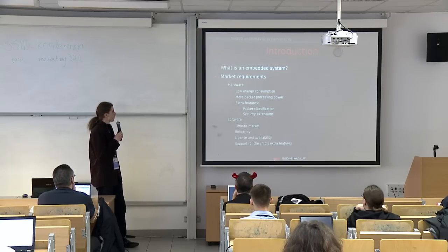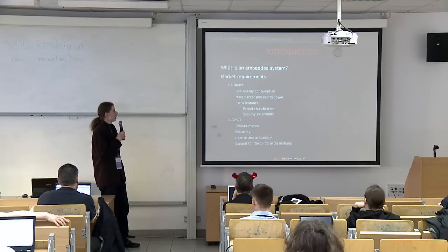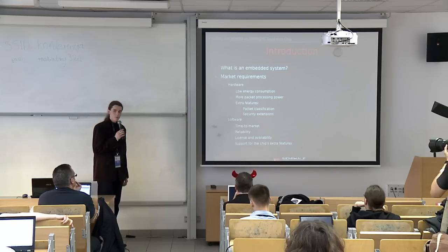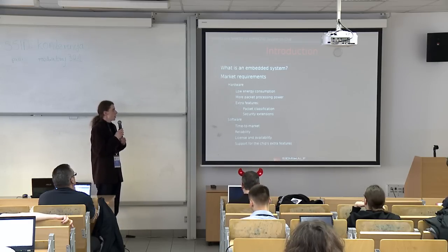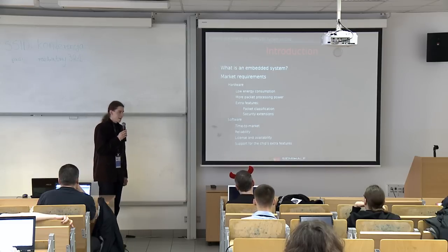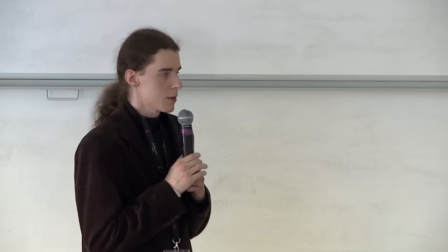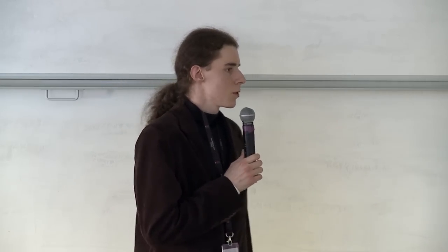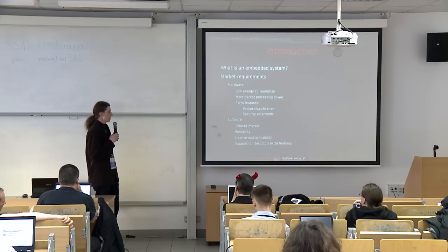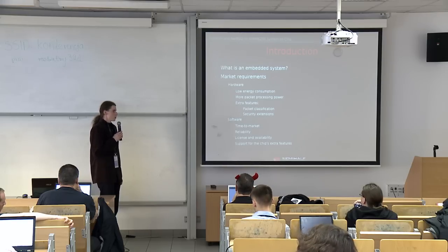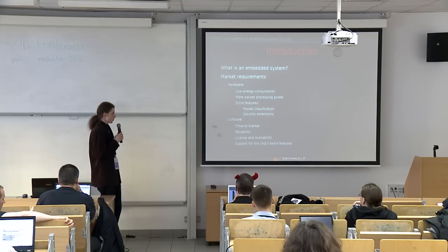A few words about software: even the most sophisticated chip is just an empty vessel without software operating its features and capabilities. Usually we want this software as soon as possible, and when the target is on the market, it has to be already supported by the operating system. Reliability, license, and availability are also important. BSD license is very friendly for vendors because not everyone wants to share their work for free — BSD license gives ownership of the code to the person developing it. Support for chip extra features is also key.